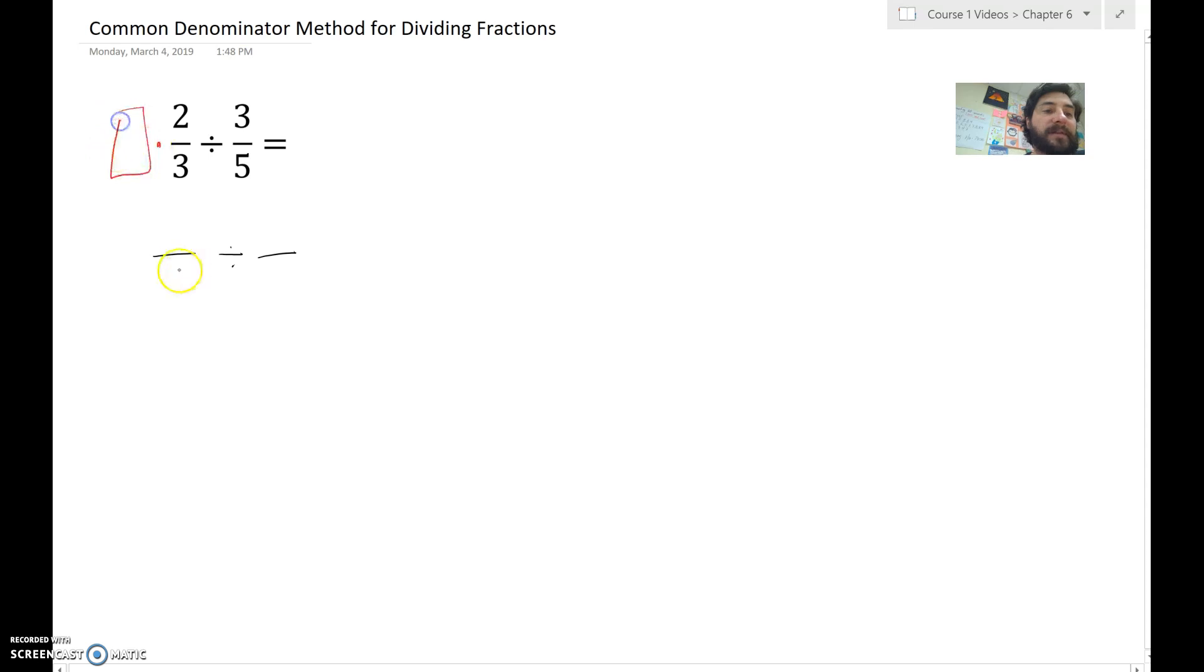So if we are trying to get 15 here, I think what am I multiplying 3 by to get 15? That would be 5. So I must multiply the numerator by 5 as well. And we get 10 fifteens.